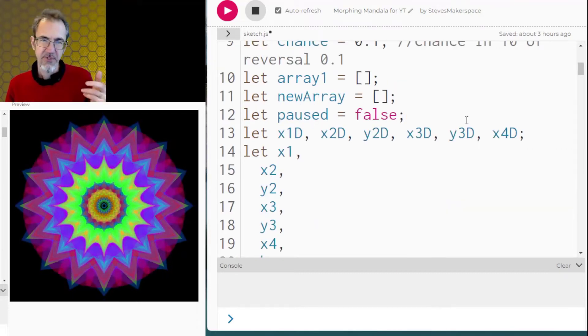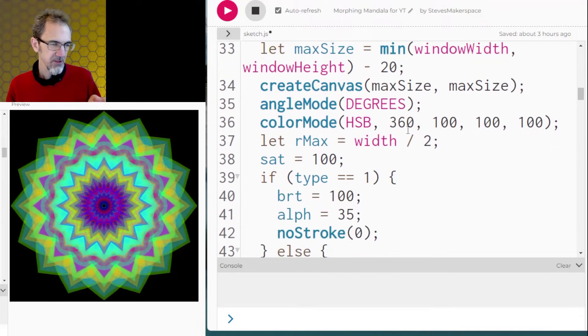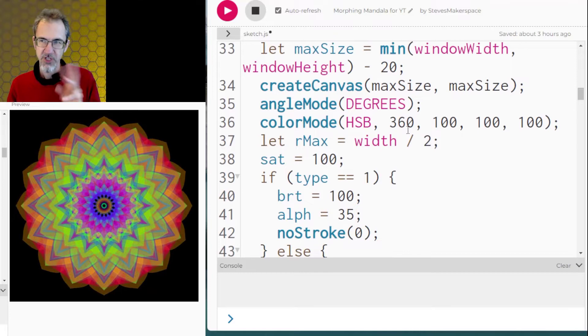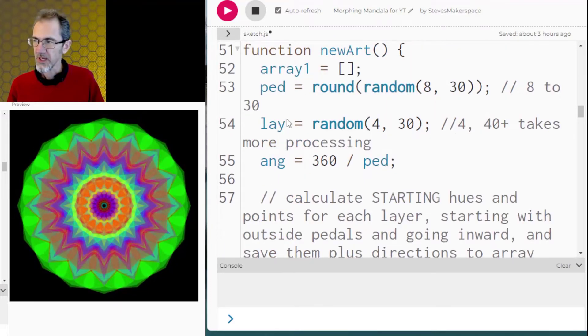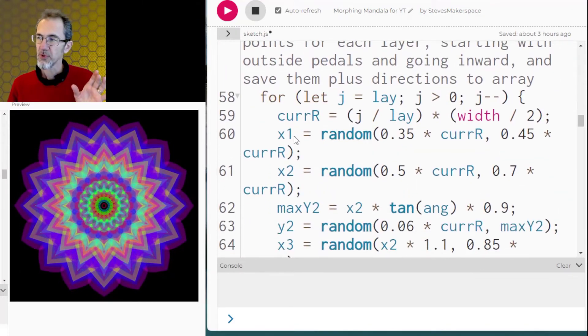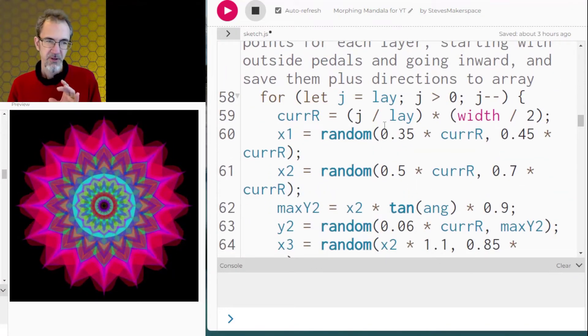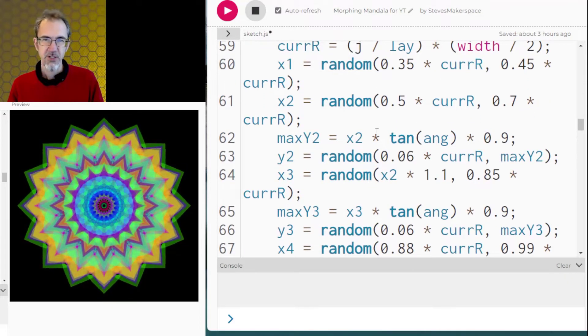But basically what I've done here is I've created an array and there's two arrays that keep changing places. When it does new art it figures out how many petals it's going to have. It figures out how many layers it's going to have. Then it goes through a loop to figure out the petal shape for each layer and it saves all that information into an array.